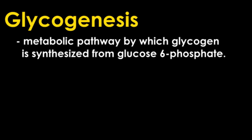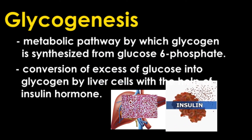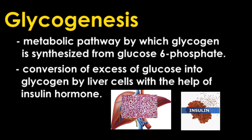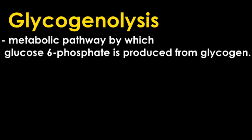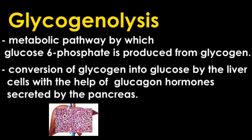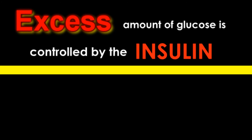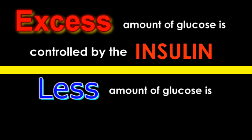Glycolysis occurs in the cytosol or cytoplasm and is common for both aerobic and anaerobic respiration. Now, the second term is glycogenesis — the metabolic pathway by which glycogen is synthesized from glucose 6-phosphate. Glycogenolysis is the metabolic pathway by which glucose 6-phosphate is produced from glycogen; it is the conversion of glycogen into glucose by liver cells with the help of glucagon hormones secreted by the pancreas. Excess glucose is controlled by insulin, and low glucose is controlled by glucagon.